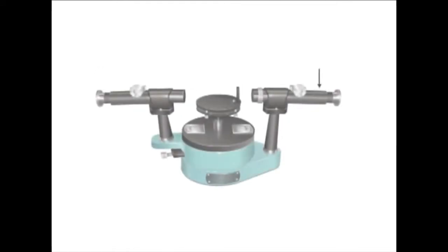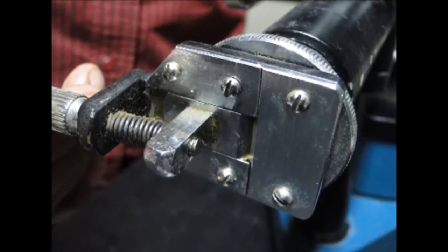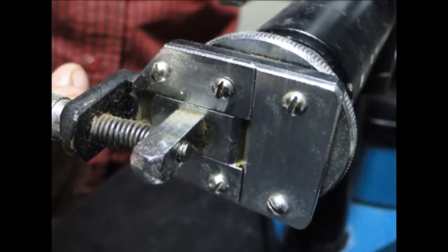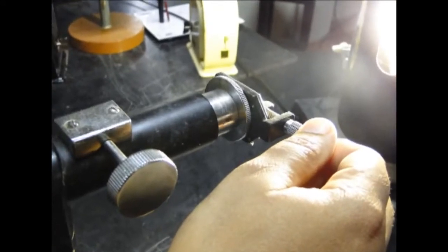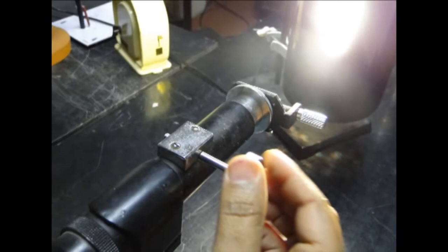The primary parts of the spectrometer are: Collimator - A slit and a converging lens are located at opposite ends of the collimator tube. When the slit is illuminated and positioned at the focal point of the lens, parallel rays of light will exit from the lens.